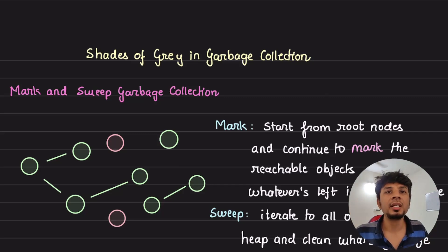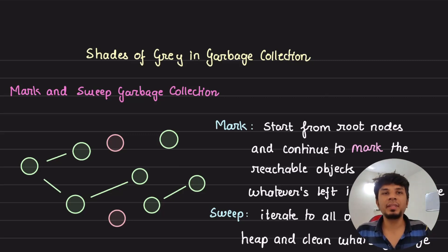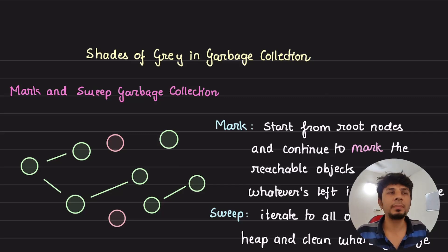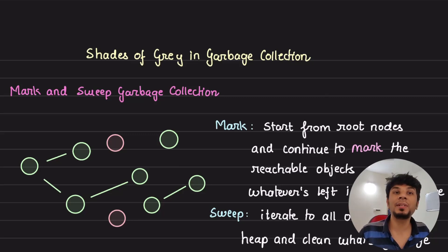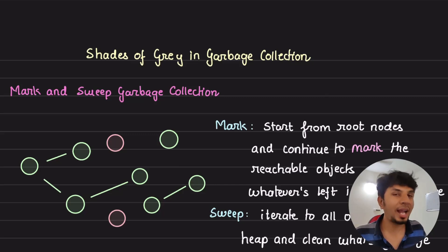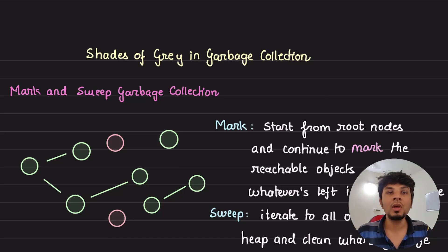So can we write a garbage collector that does not stop the world and runs concurrently with the program, giving us a massive performance boost? In this video we take a look at something foundational called the tricolor invariant. This concept was contributed by Dijkstra, who is most famous for his shortest path algorithm. The tricolor invariant allows us to build garbage collectors that run concurrently with the program with very small pause times.